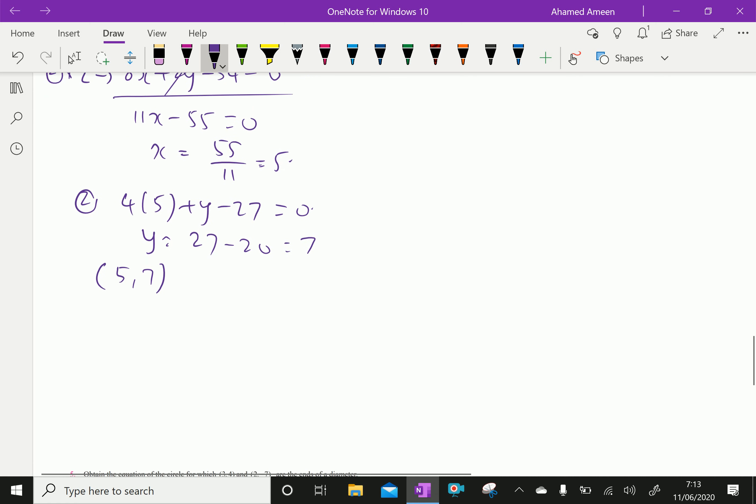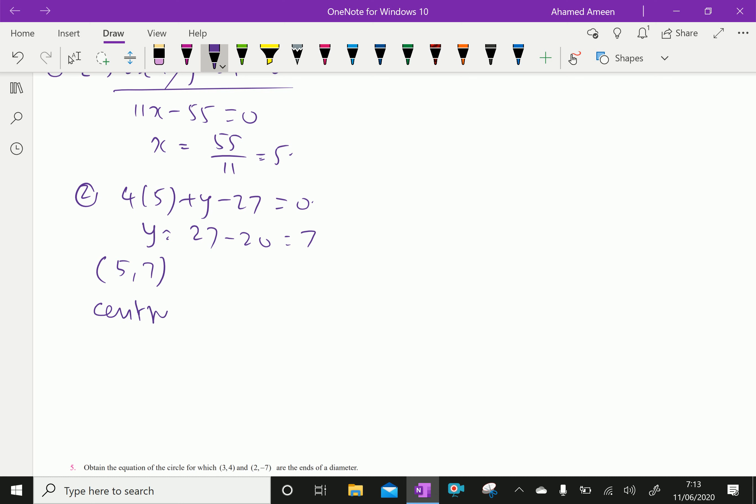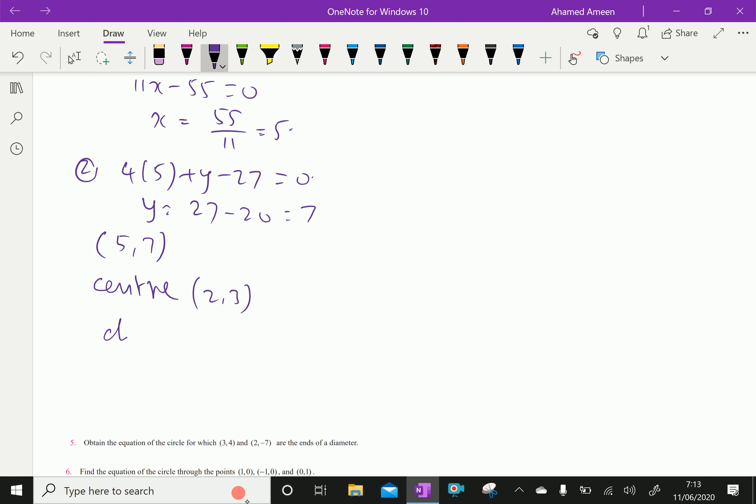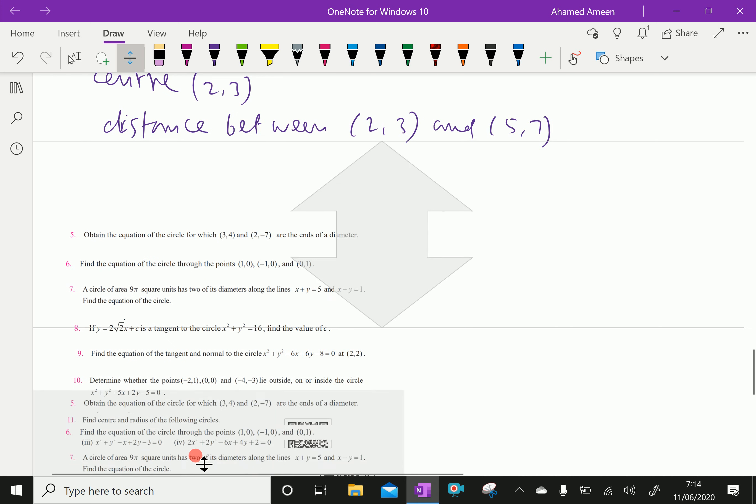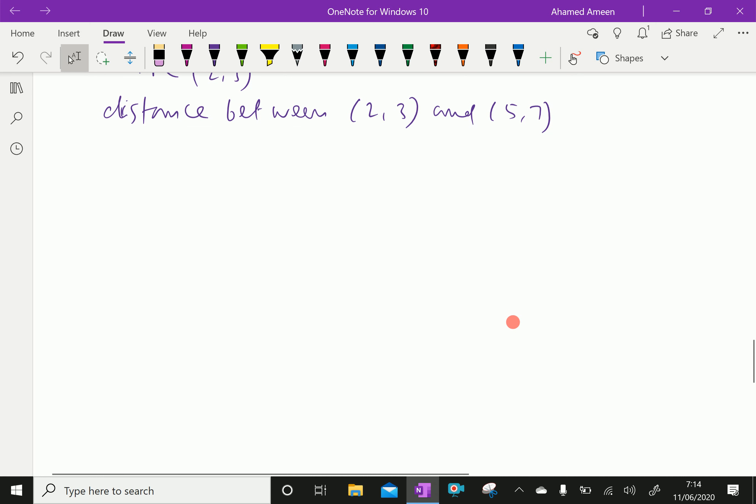Now, the center of the required circle is given as (2,3). So we have to find the distance between (2,3) and the passing through point (5,7). Now, let us get some space for this. That is the radius.